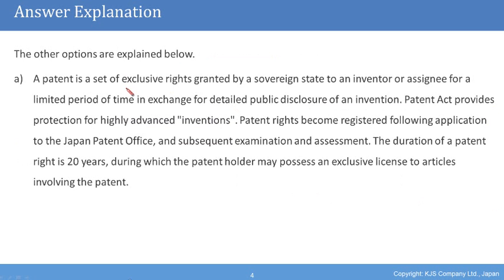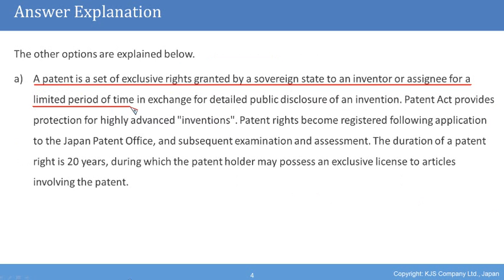The other options are explained below. A patent is a set of exclusive rights granted by a sovereign state to an inventor or assignee for a limited period of time in exchange for detailed public disclosure of an invention. The Patent Act provides protection for highly advanced inventions. Patent rights become registered following an application to the Japan Patent Office and subsequent examination and assessment. The duration of a patent right is 20 years, during which the patent holder may possess an exclusive license to articles involving the patent.